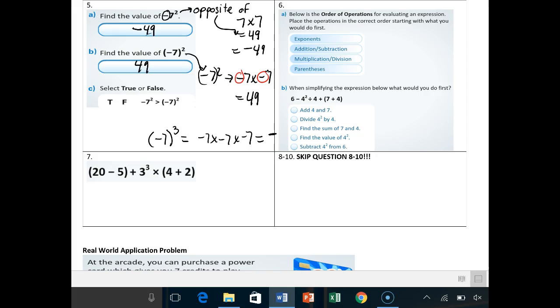So if I take a look at C, true or false, well, I'm just going to look at my answer for A. Well, negative 7 squared is negative 49. And then parentheses, negative 7 squared is 49. So is this true? Is negative 49 bigger than 49? No, absolutely not. It's false.